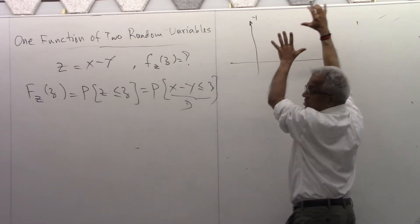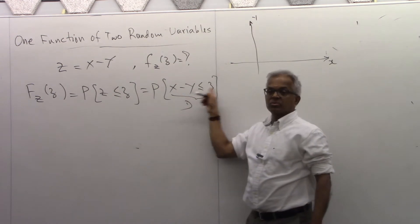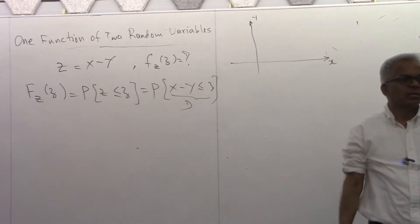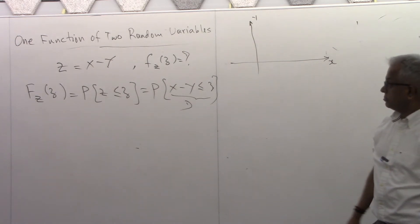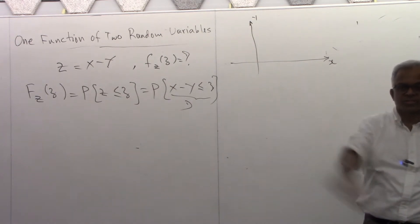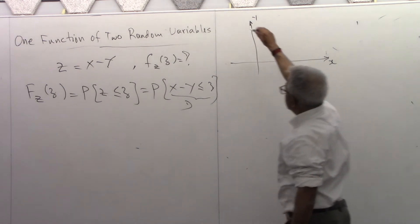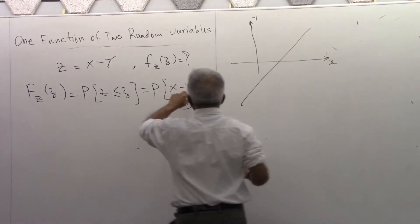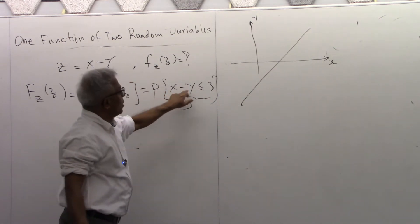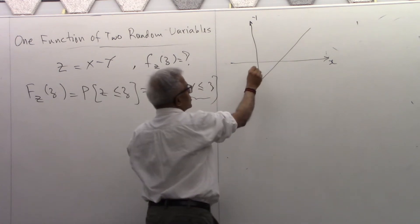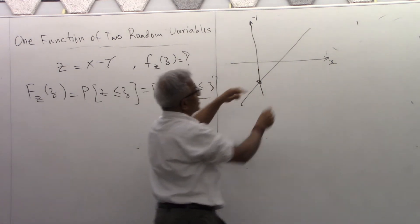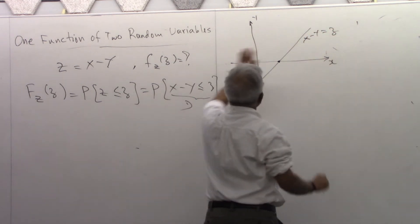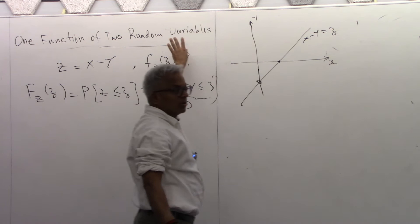Remember, the joint density function is defined here. Draw the line with equality: X minus Y equal to Z. Put X equal to 0, Y is minus Z — that gives one point. Put Y equal to 0, X is Z. So the line goes this way. Now, where is the region X minus Y less than or equal to Z?